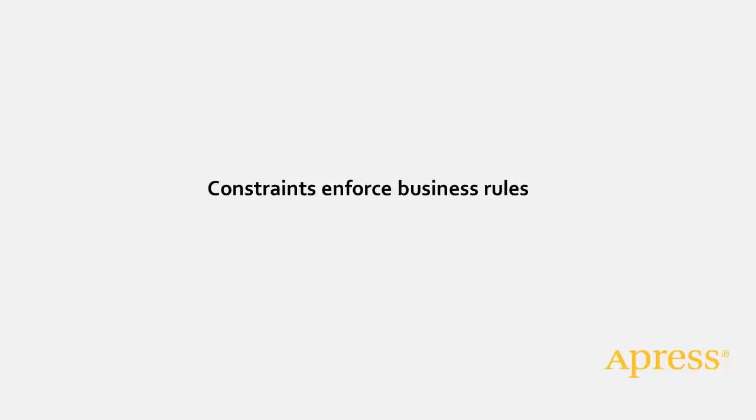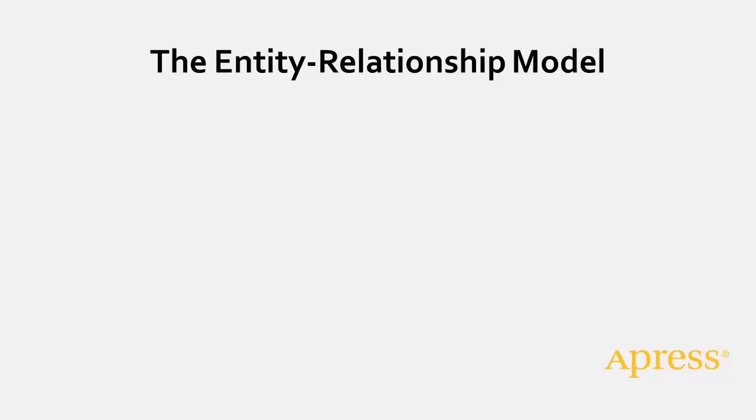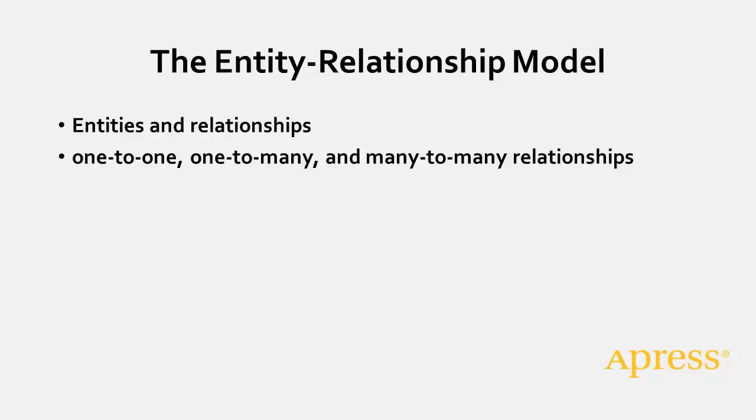In this video, we've discussed modeling a system of interest according to the Entity Relationship Model paradigm. The key components of the model are entities and relationships between them. We talked about the three kinds of binary relationships — one-to-one, one-to-many, and many-to-many — and how those relationships reflect the maximum cardinality of the link between two entities.